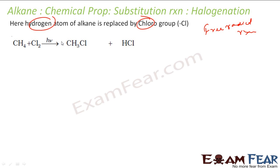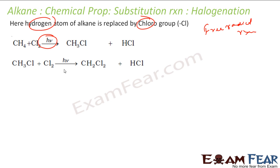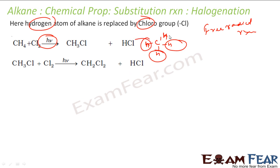CH₄ (methane) plus chlorine in the presence of sunlight gives CH₃Cl and HCl. The moment you add more chlorine, more hydrogen will be replaced. For example, with methane, you add chlorine — one hydrogen is replaced, then another, then another — and at the end you get CCl₄. These are free radical reactions.